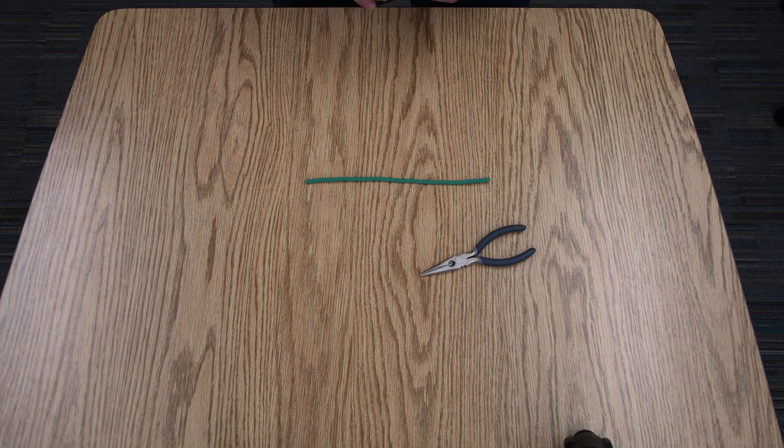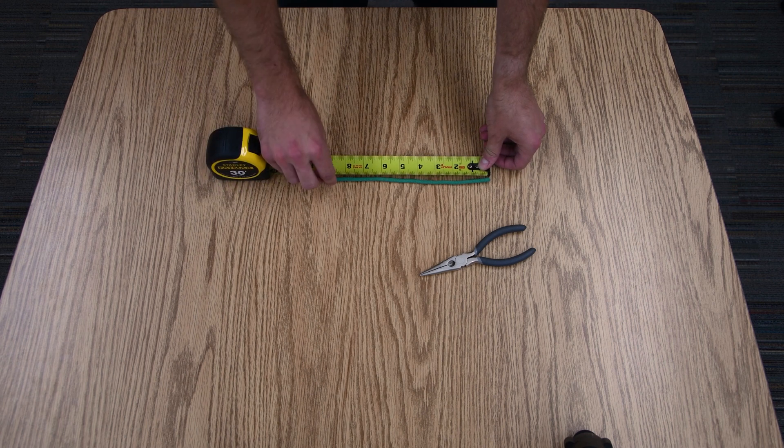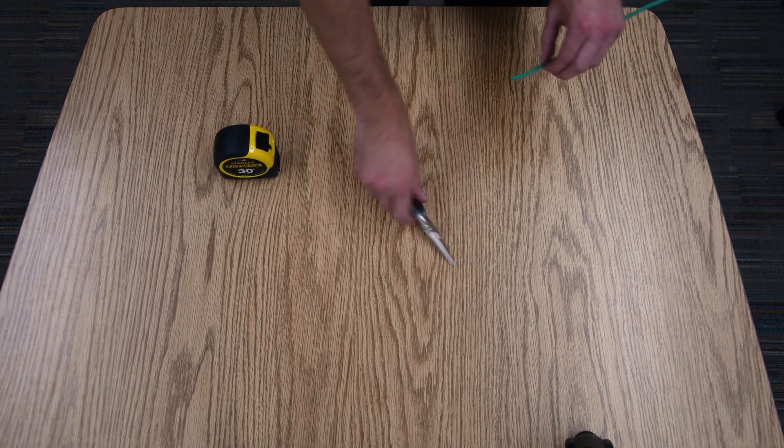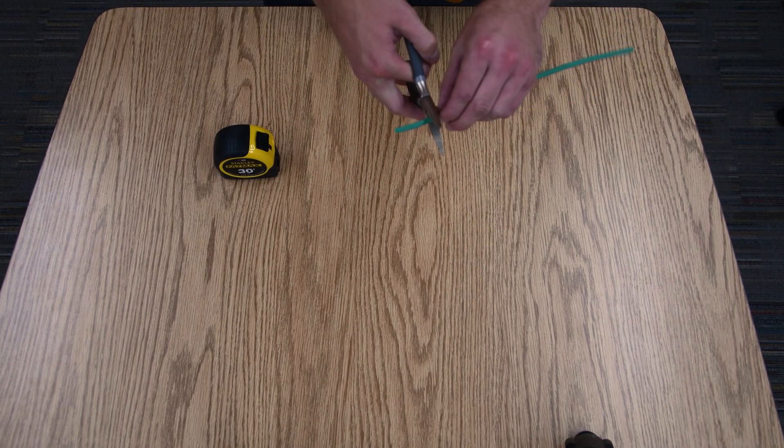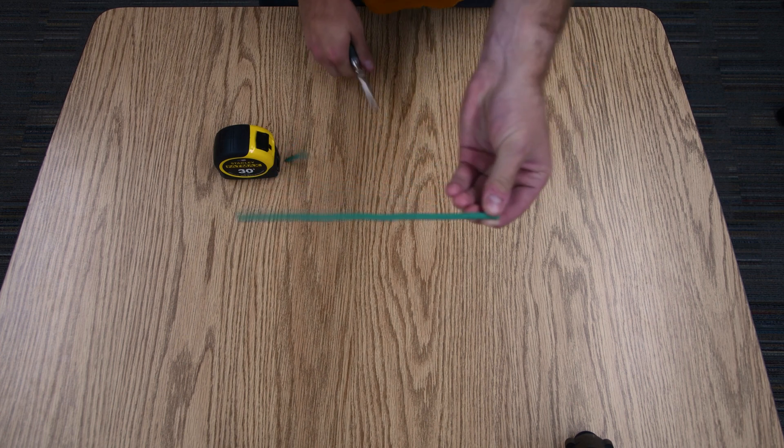To get started, we'll cut eight and a half inches of the foam covered wire, eight and a half right there, and we're going to cut it using the cutting tool on the pliers because it doesn't work as well with a pair of scissors.